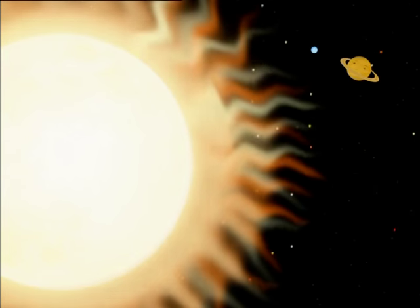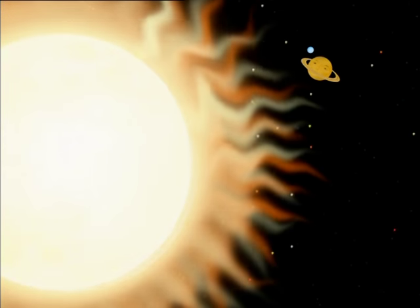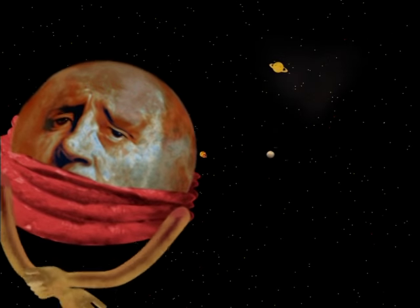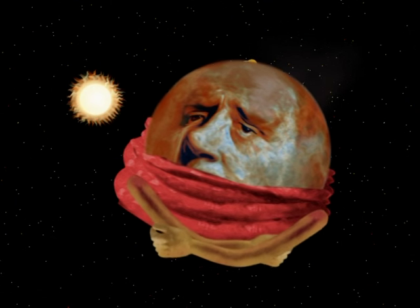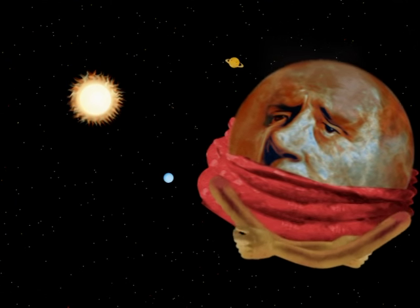Mercury, which is closest to the Sun, only takes 88 days to do this. But a Pluto year takes 248 Earth years.